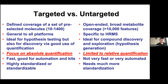Untargeted is specific to high-resolution mass spec. It is the ideal approach for compound discovery, good for exploration and hypothesis generation. You can do relative quantification—this is higher than that—but you don't get concentrations, and relative values vary from lab to lab or day to day. As a rule, it's not very fast, not very automated, and not very standardized. That's been a problem. It's fun if everything is non-standard, but it doesn't get you very far in terms of translation.